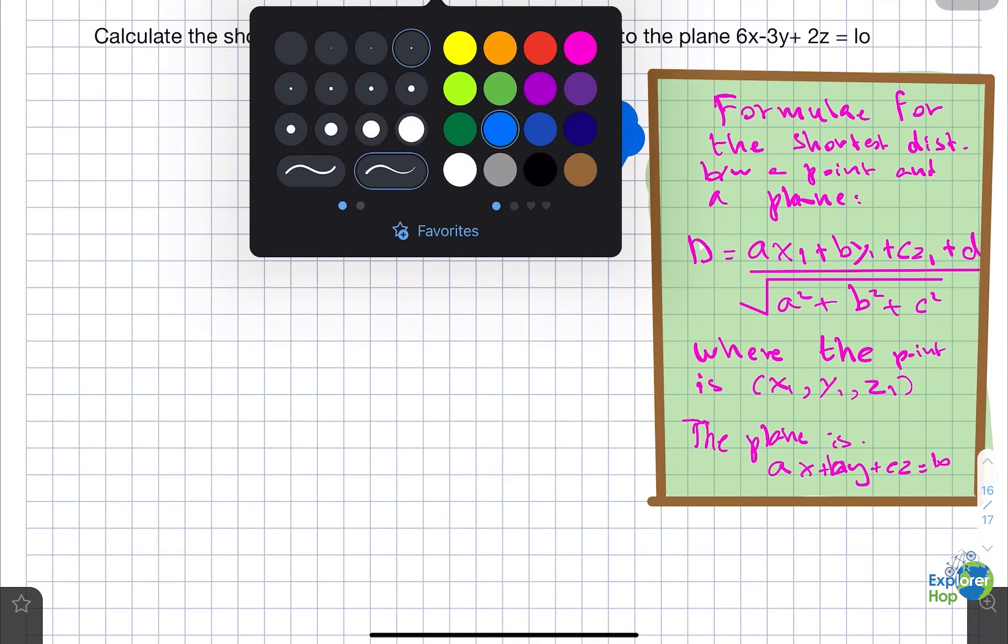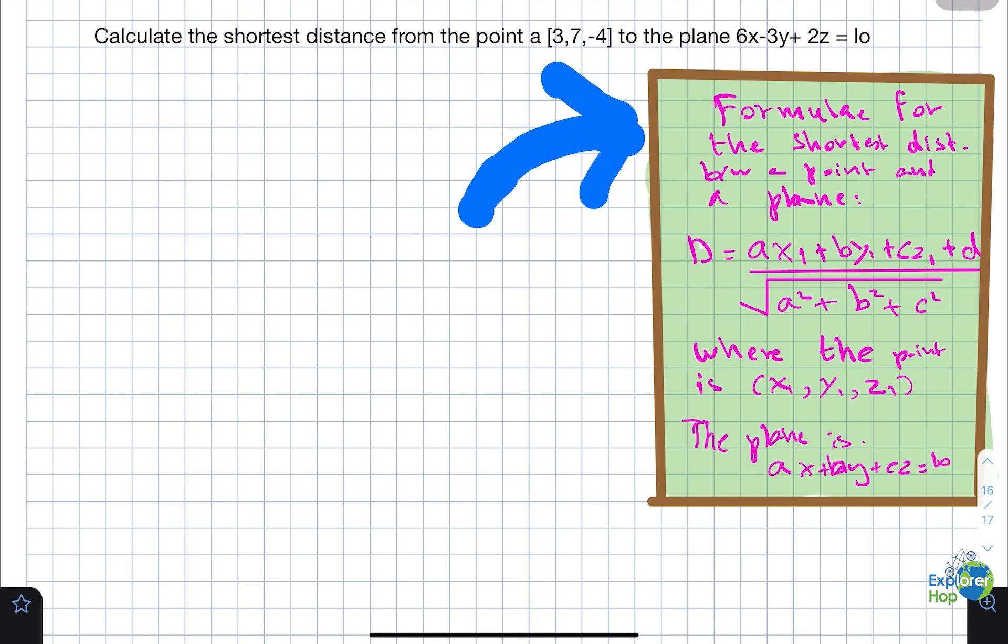So let's solve this question. We know that our point is (3, 7, -4), which means that x1 equals 3, y1 equals 7, and z1 equals minus 4.